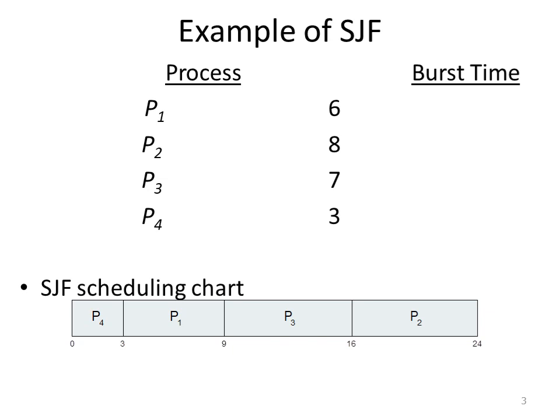Among this set of processes, compared with the first come first serve scheduling algorithm, this SJF results in an optimal solution. Because with the same four processes, if you calculate the average waiting time using FCFS algorithm, it gives the average waiting time as 10.25 ms, whereas here we are getting the average waiting time of 7 ms, so compared with that we can say it is better.